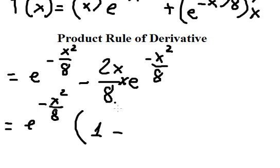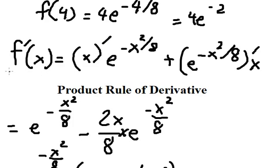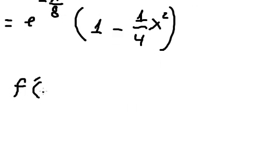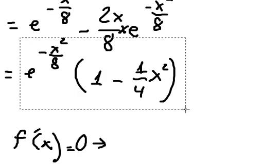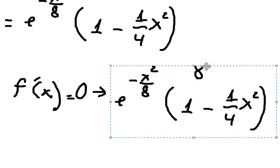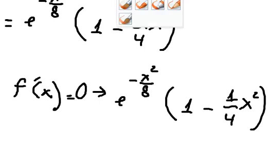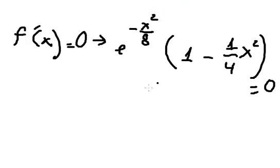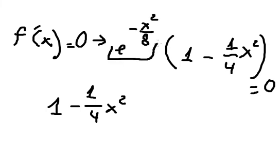Two divided by eight gives us one over four. So we need to find the critical point, and we set this equal to zero. That means this factor equals zero — we only have this one, since the exponential factor has no solution equal to zero.